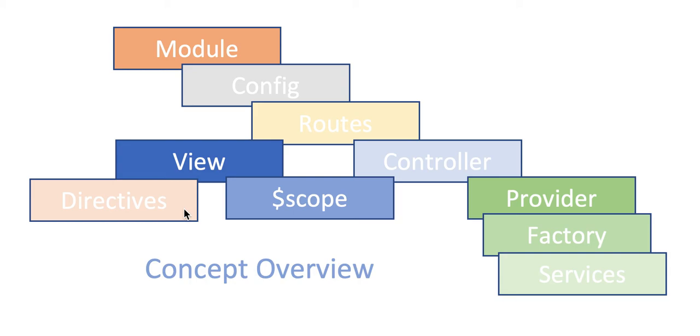We'll see more on this when we write code in AngularJS in my next video. Then we have the scope. The scope is actually the context where the model is stored so that controllers, directives, and expressions can access the model data.